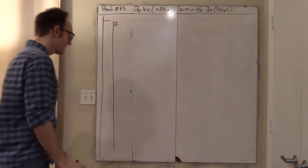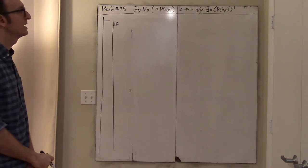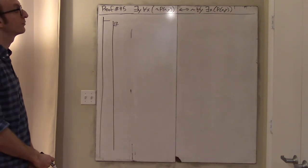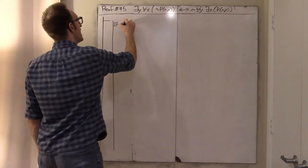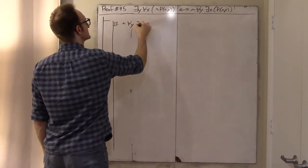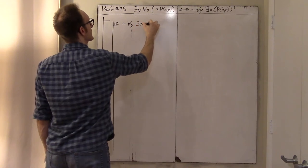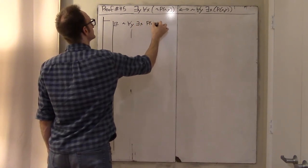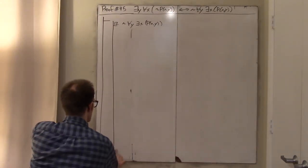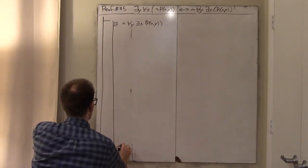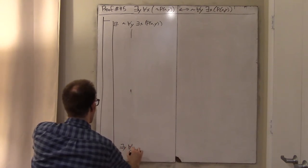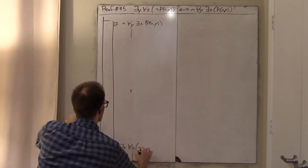Here we'll start in line 12. I need to now go from right to left. I assume that it's not the case that for all y, there exists an x, p of x, y. And way down here, I need to prove that there exists a y such that for all x, not p of x, y.